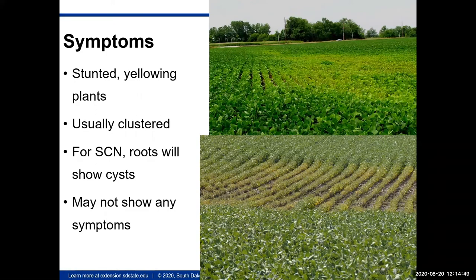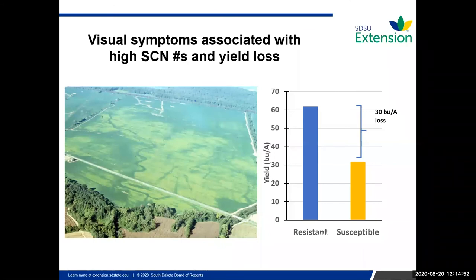Symptoms depend on your SCN population, soil type, soil pH, soil moisture, soil fertility, and field history including rotations and use of SCN-resistant varieties. Looking at visual symptoms with high SCN numbers, a resistant cultivar versus a susceptible cultivar showed about a 30 percent bushel loss — the resistant yielded just over 60 bushels per acre whereas the susceptible was about 30 bushels per acre, so roughly a 50 percent yield loss due to SCN.